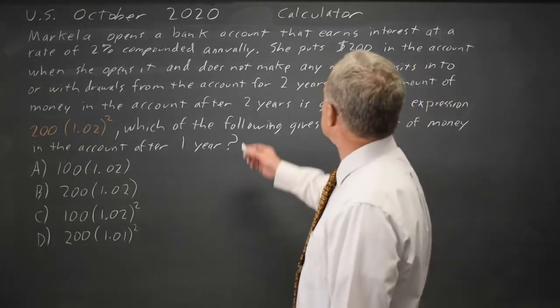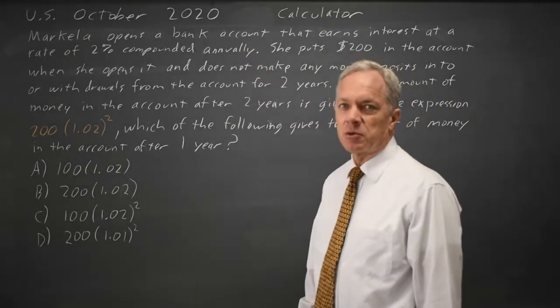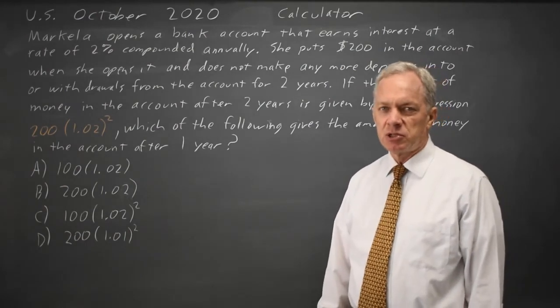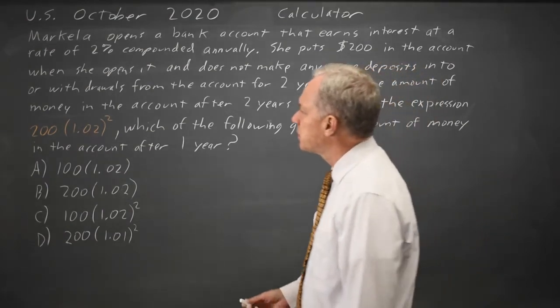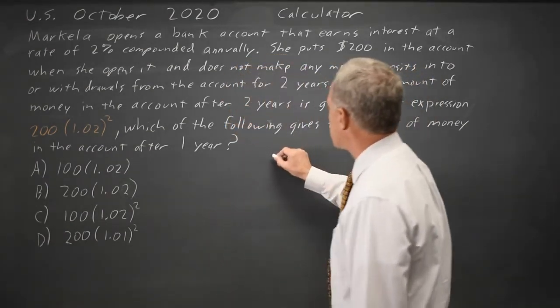The College Board talks about opening an account with a deposit of $200 at 2% interest compounded annually for two years, and that is governed by the formula.